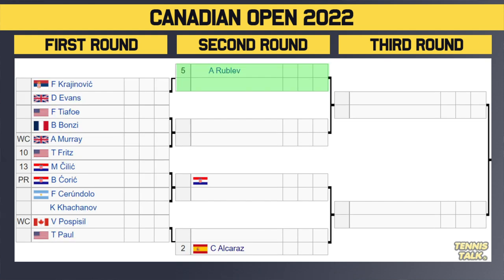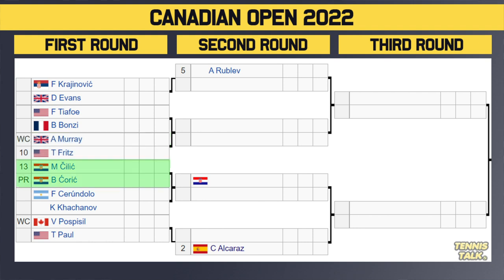In the final section, Rublev, the number five seed, gets a bye in the first round. The winner between Kravicic and Evans will take on Rublev in the second round. Then we've got Tiafoe taking on Bonzi. Winner of that takes on either Murray or the number 10 seed, Fritz. Nightmare start for Murray — Fritz on hard courts in North America is not who you want to play. Fritz versus Rublev third round could be fun. Then Cilic, the 13th seed, takes on Chorich. Winner takes on either Seyboth Wild or Gakhov. Then Pospisil takes on Paul, and the winner takes on the number two seed, Carlos Alcaraz. So Alcaraz versus Cilic third round, Alcaraz versus Rublev quarterfinal — there are so many crazy matchups.